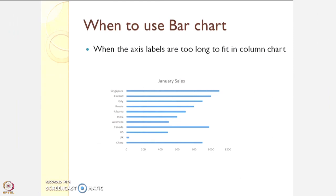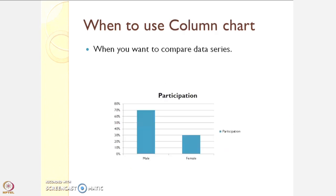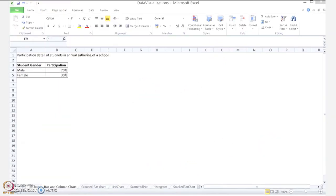Next is the bar chart. You use a bar chart when the axis labels are too long to fit in a column chart. A bar chart is arranged along the horizontal axis, that is, the y-axis. The column chart is used to compare data series. Let's see how to construct a bar chart or column chart for the same data.